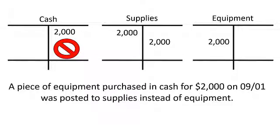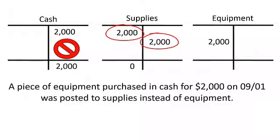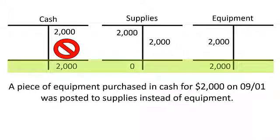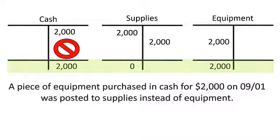Instead, we're going to put the credit to supplies, and that makes sense. If you total each of these T-accounts, the net change to cash would be a credit of $2,000. The net change to supplies would be zero because you have a debit and a credit that subtract each other, being on opposite sides, leaving a zero net difference. And equipment would have a net difference of a debit of $2,000.